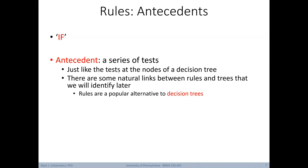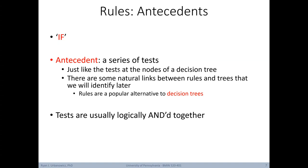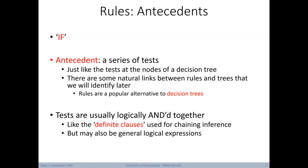The antecedent represents a series of tests to be conducted, not unlike the tests at each node of a decision tree. There are natural links between rules and trees. In terms of expert systems, rules are a popular alternative to decision trees. These tests making up the antecedents are usually logically ANDed together, similar to definite clauses from logic used for chaining inference. However, in certain circumstances, rules can have different logical expressions.